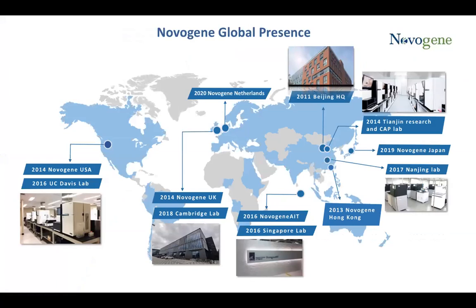Here is a map of where Novogene is located today. We started in 2011 in our Beijing headquarters and have been growing rapidly, resulting in multiple subsidiaries around the globe. We have a subsidiary in the United States, a lab in Cambridge in the UK serving the majority of our European market, and we are in the pipeline of establishing a subsidiary in the Netherlands.